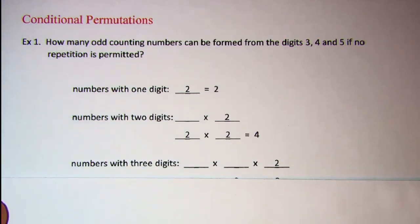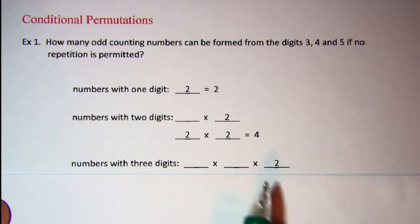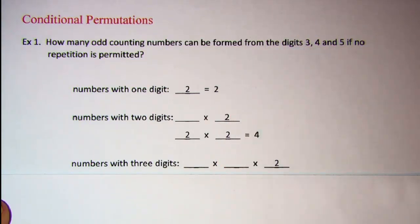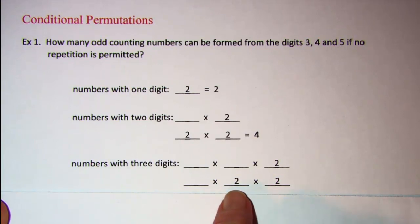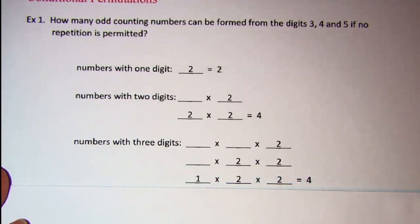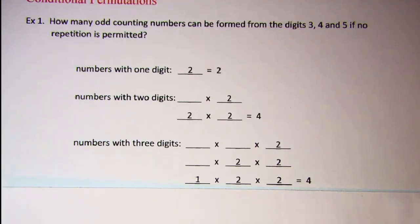And then numbers with three digits, again I need to fill in this last spot because it needs to be an odd number and I only have two odd numbers to choose from. Once I fill in that spot, I only have two numbers to choose from again for this spot. And once I fill in that spot, there's only one digit left to choose from for this one. So the product here by the fundamental counting principle is four.